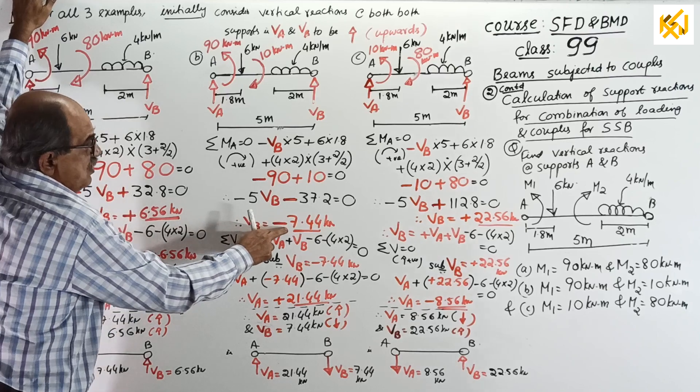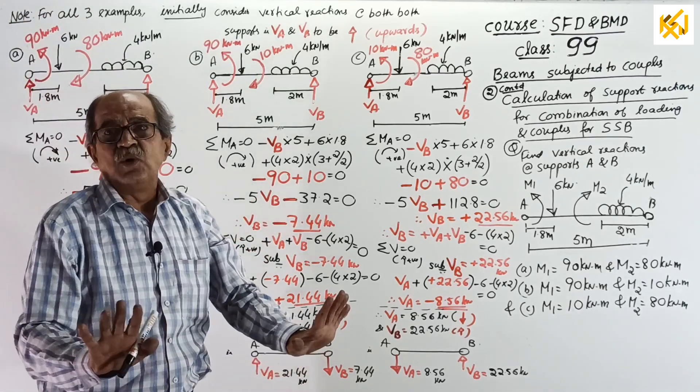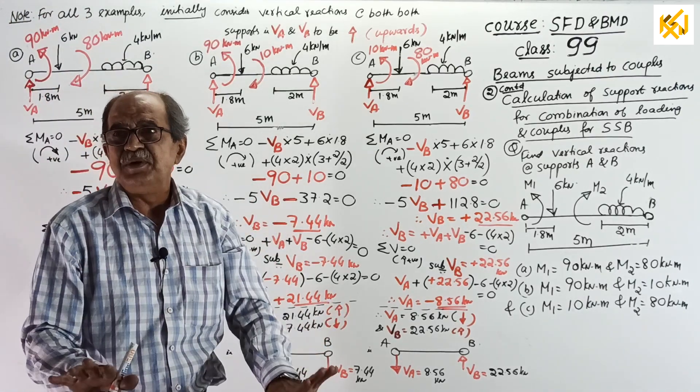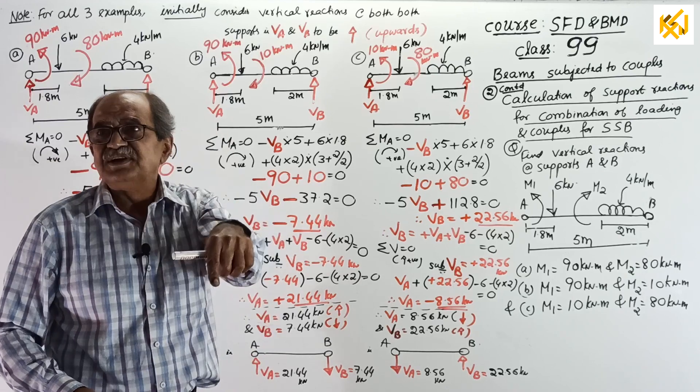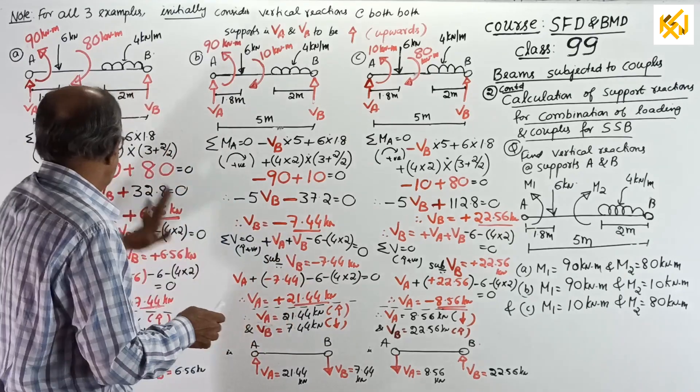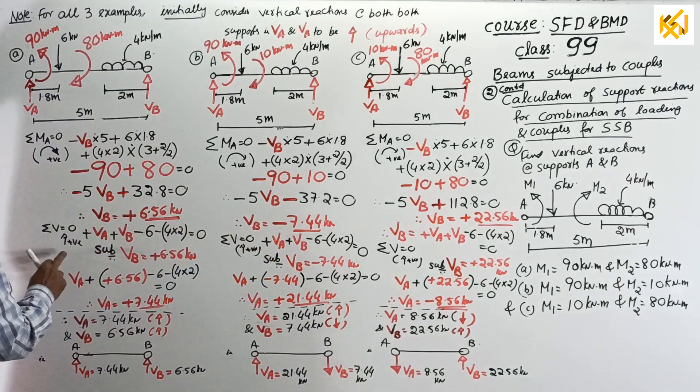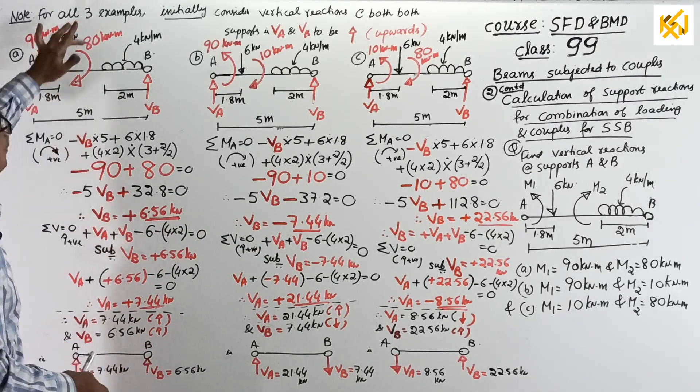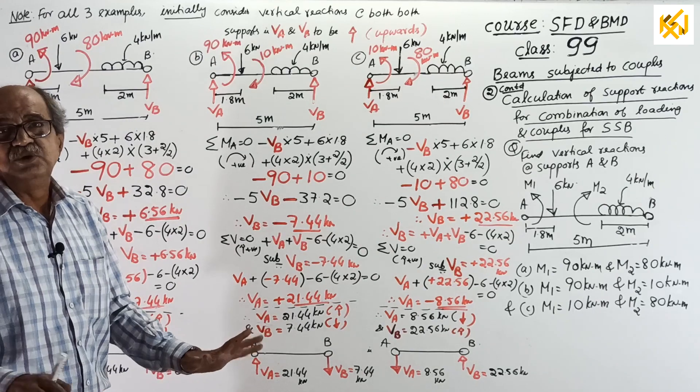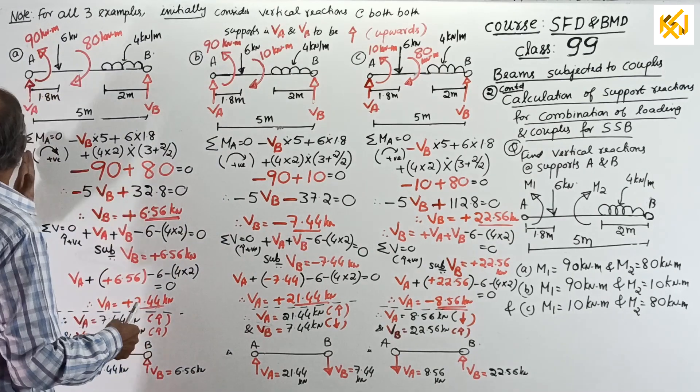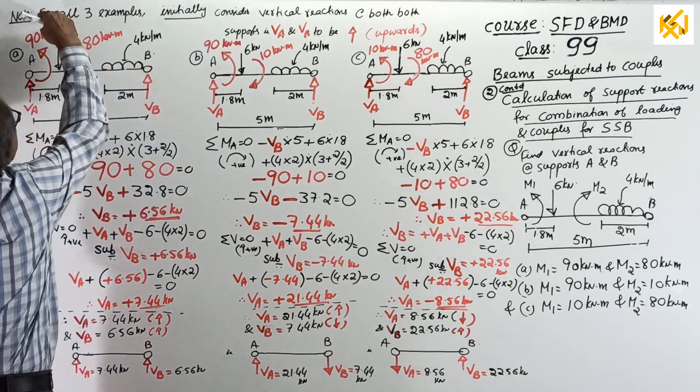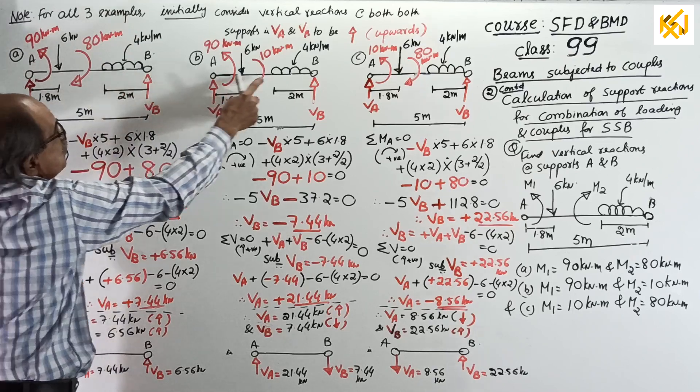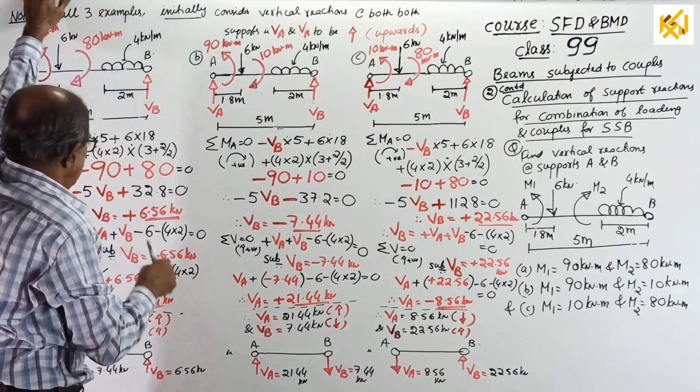See, now, here you got negative. Do not bother now about negative. You finish the equilibrium equation. When you go to result, then worry about negative. See, next, all three questions, sigma V equals 0, will remain same. Why? For sigma V equals 0, you don't consider the couples. You consider only loading. So, plus VA, plus VB, minus 6, minus 4 into 2, equal to 0, for all three questions.